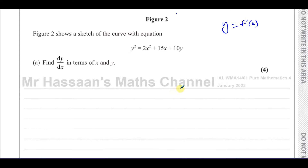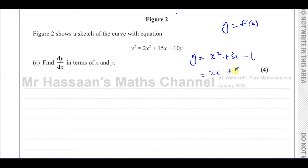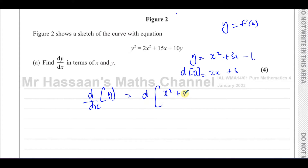Implicit differentiation is based on the fact that when you differentiate an expression, you differentiate each term separately. For example, when we have y equals x squared plus 3x minus 1 and we find dy/dx, we differentiate each term separately. So we're actually differentiating both sides of the equation — taking one side and differentiating with respect to x, and taking the other side and differentiating all of it with respect to x.